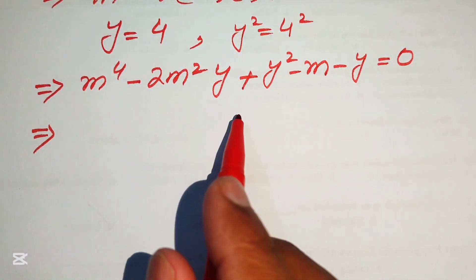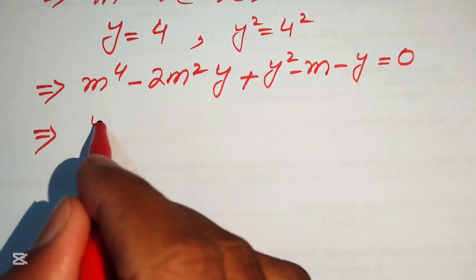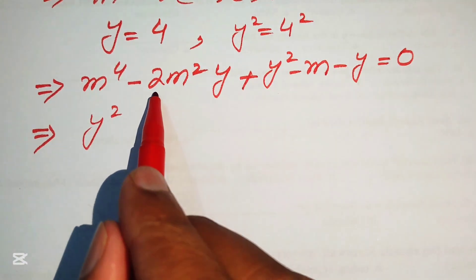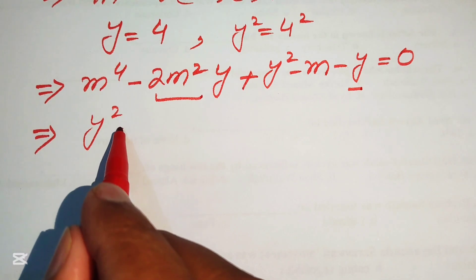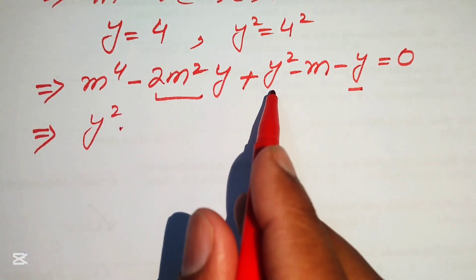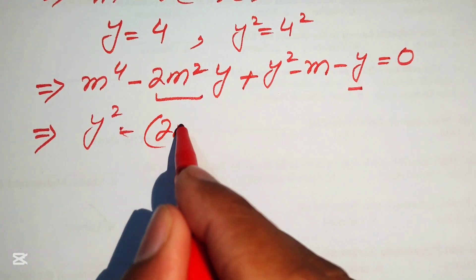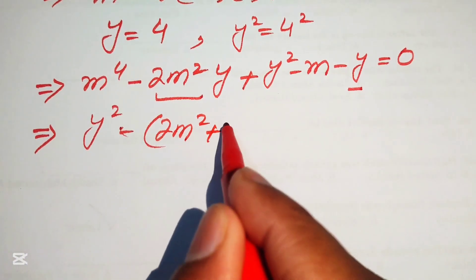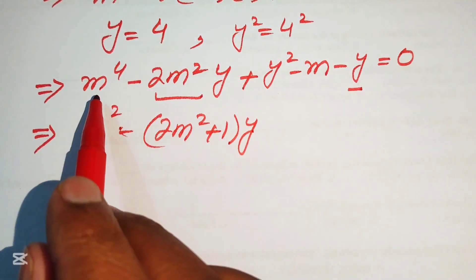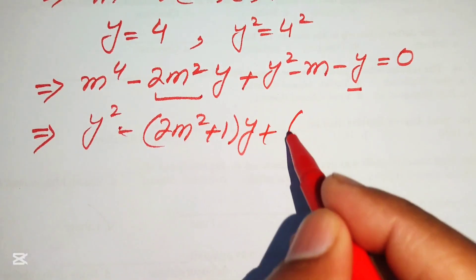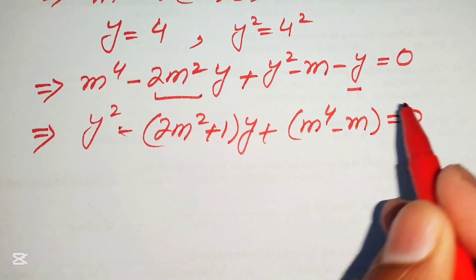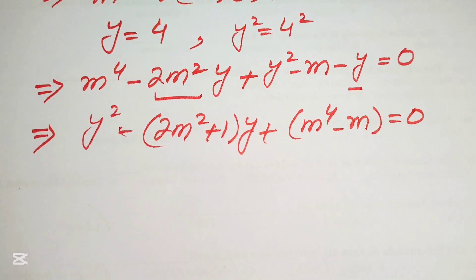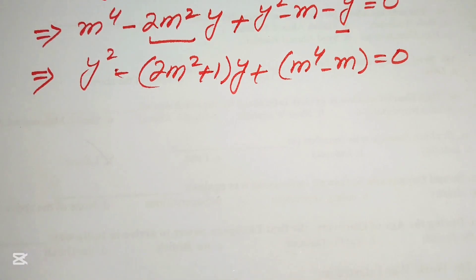We reorder the terms and write: y² minus (2m² + 1)y plus (m⁴ - m) = 0, factoring out y from the middle terms. This is now a standard quadratic equation in the variable y.